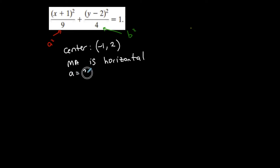a is equal to 3, and b is equal to 2. So that means that the length of the major axis is a plus a, or twice a, which is 6. And the length of the minor axis is b plus b, or 2 plus 2, or twice b, or 4.